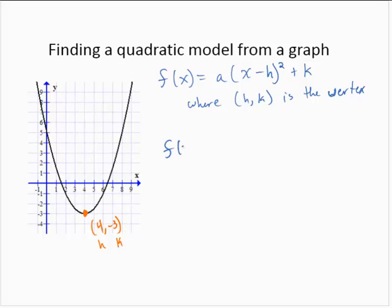So I now have f of x is a times x minus 4 squared plus negative 3. And we'll clean that up a little bit and write it as f of x is equal to a times x minus 4 squared minus 3.